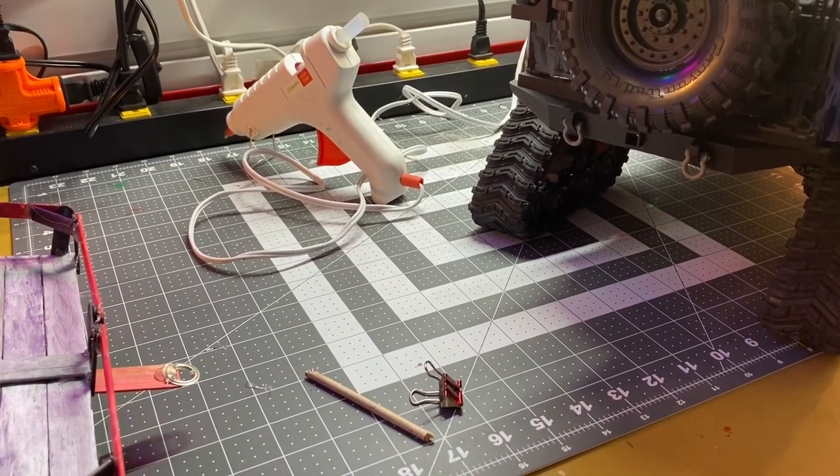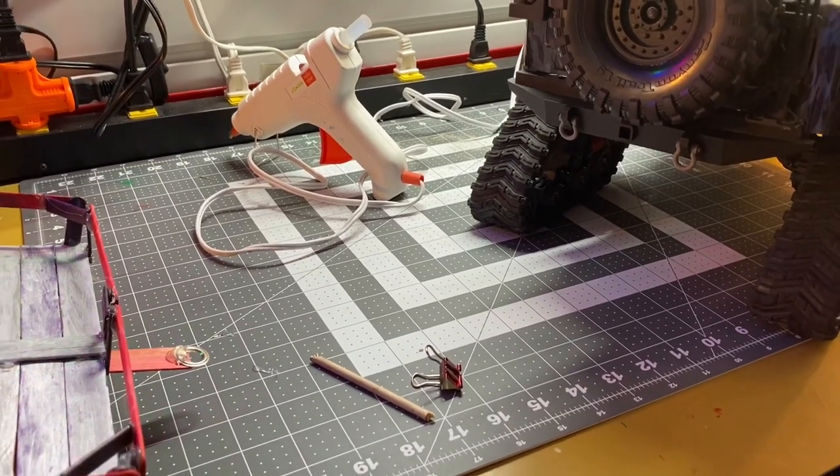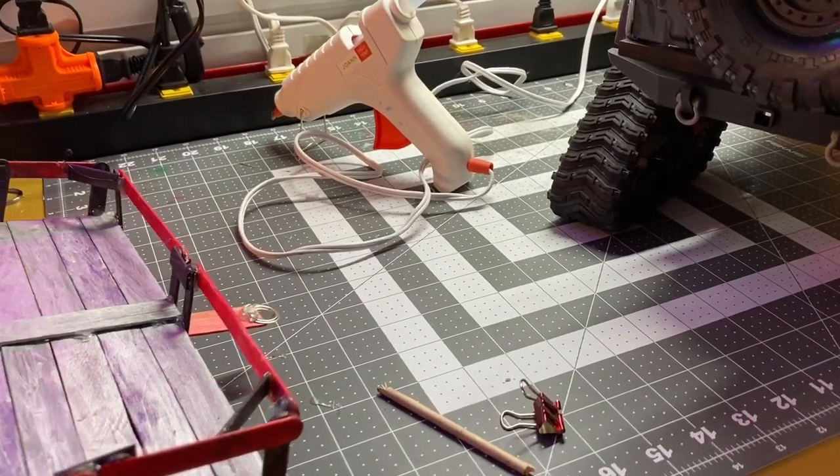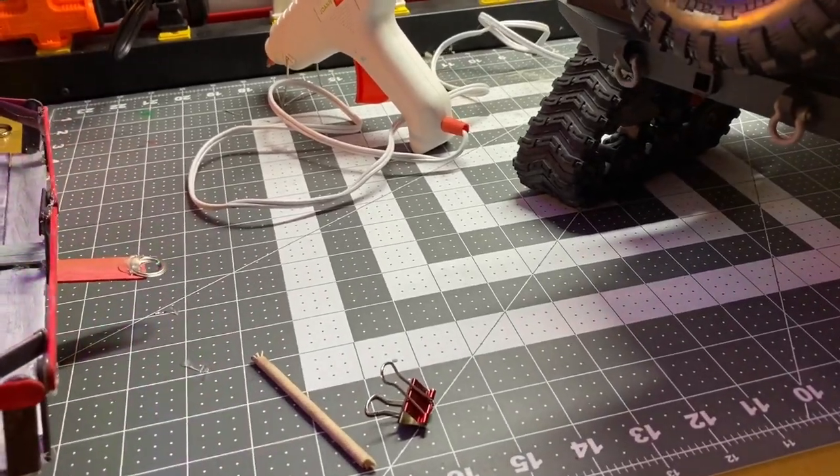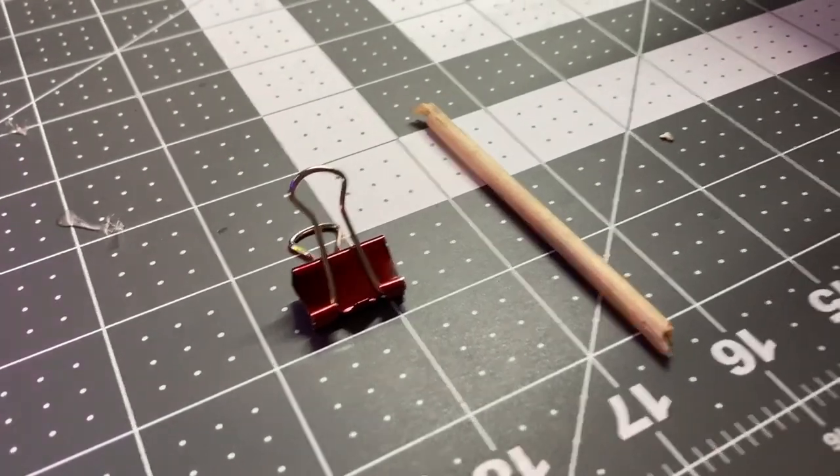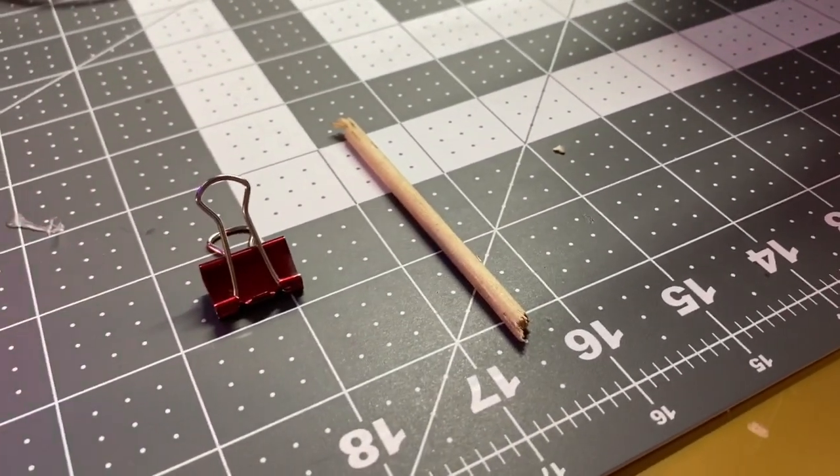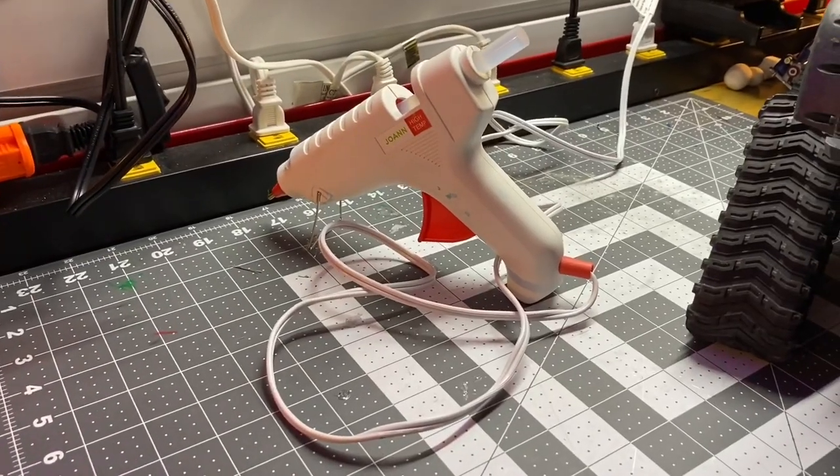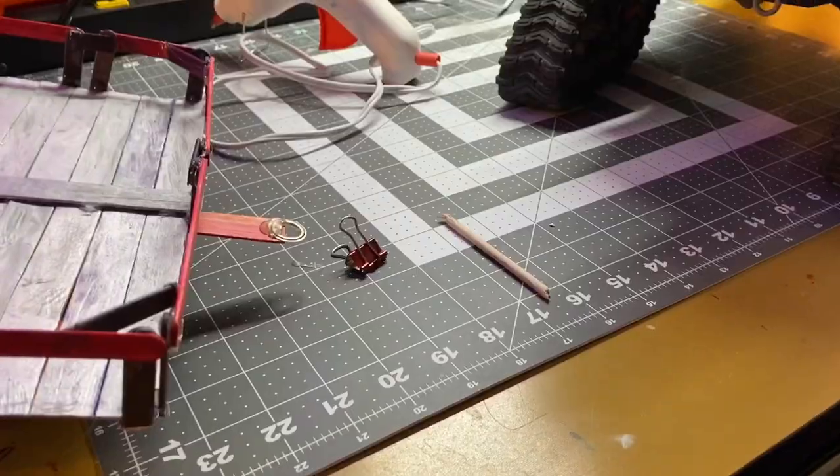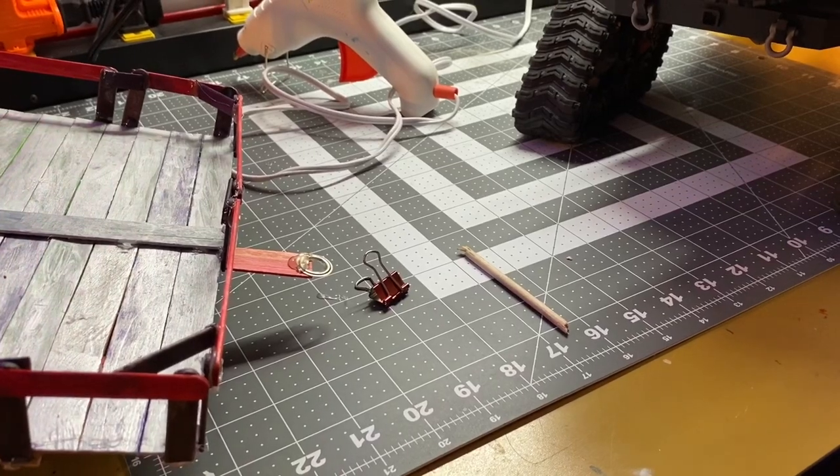Hey guys, today we're going to be showing you how to build a perfect trailer hitch. It's very simple and only requires a few things. All you need is a paper clip and a wooden stick, and also you can use hot glue or duct tape. Alright guys, let's get started.